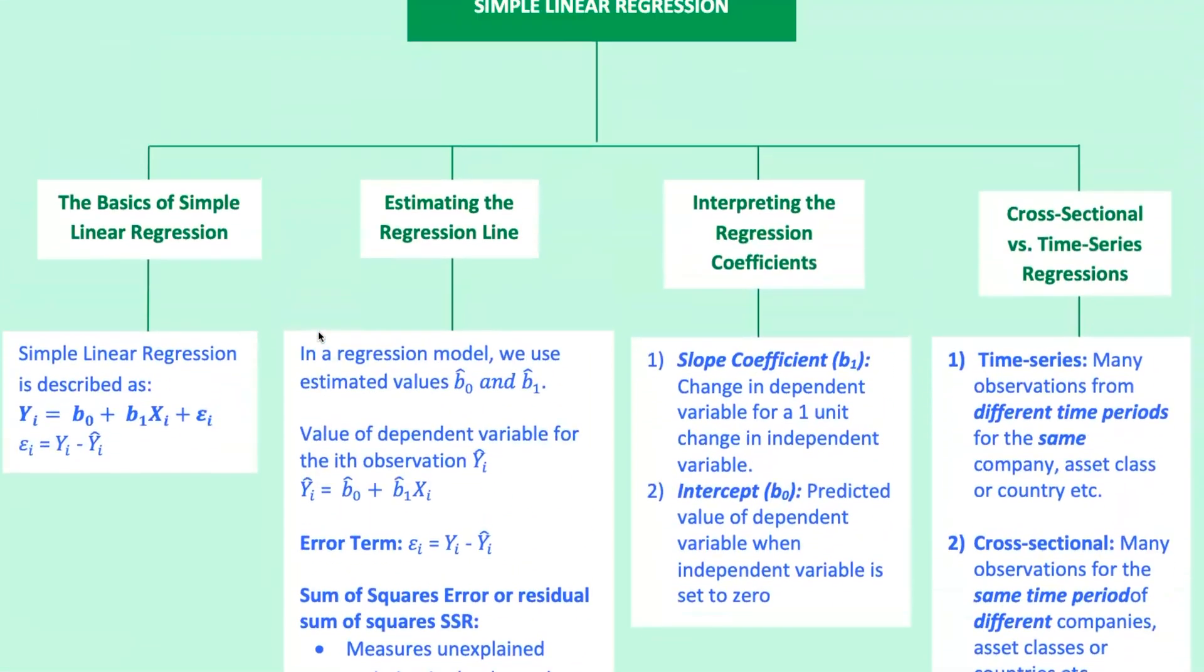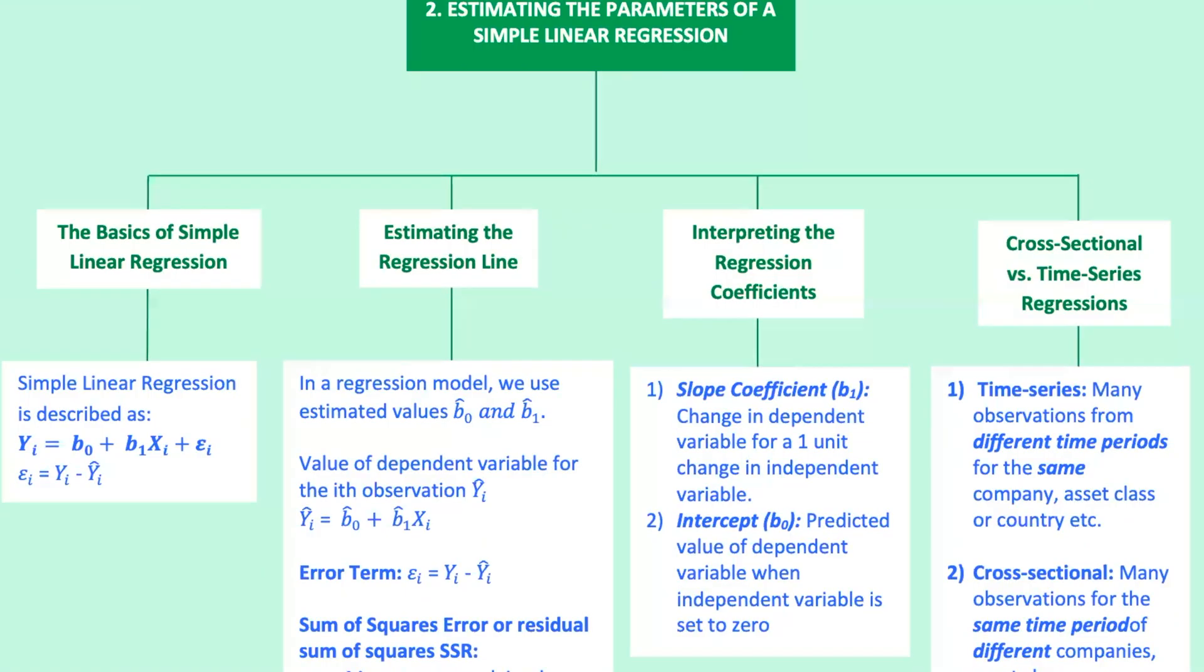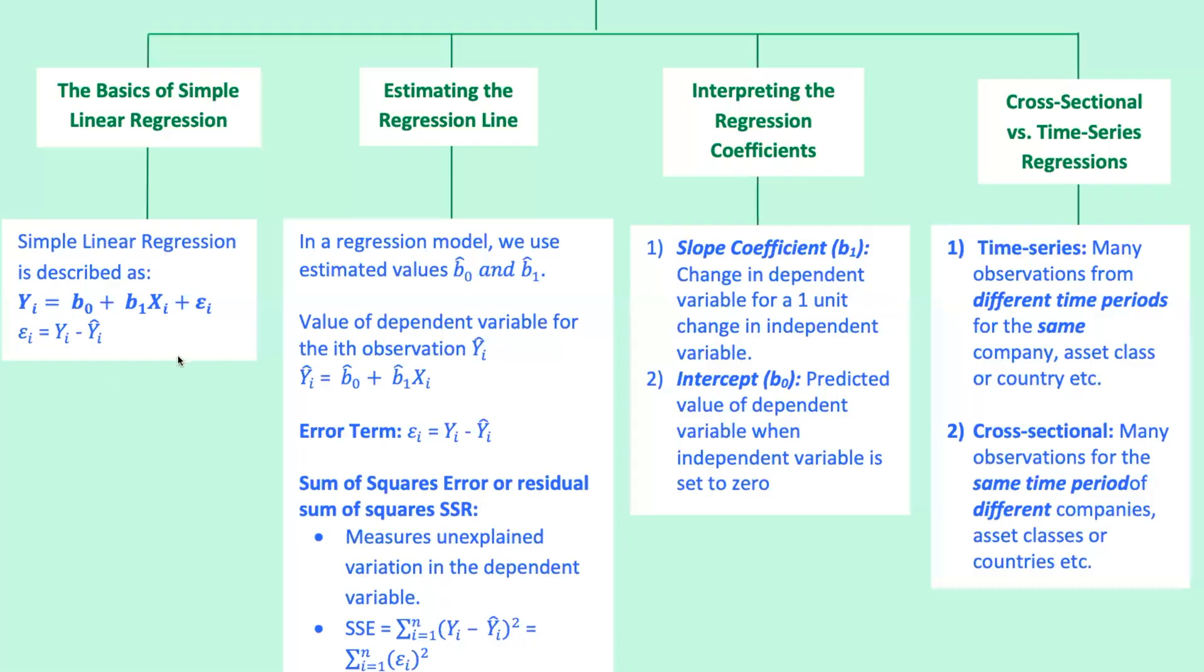In regression analysis, we have two key variables. Dependent variable y, also known as the explained variable, this is the variable we're trying to predict or explain. Independent variable x, also known as the explanatory variable, this is the variable used to explain the dependent variable. Linear regression assumes a straight line relationship between the dependent and independent variables. Our objective is to fit a line to the observations of y and x to minimize the squared deviations from the line.